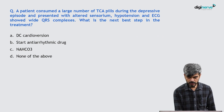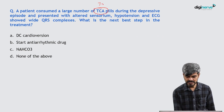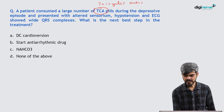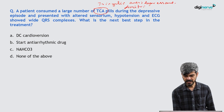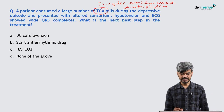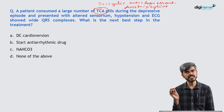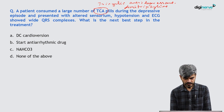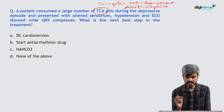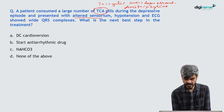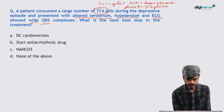A patient consumed a large number of TCA — tricyclic antidepressants. Examples include Amitriptyline, Imipramine, Dosulepin, and Nortriptyline — these are older antidepressants. He has consumed a large amount and presented with altered sensorium, hypotension, and ECG showing wide QRS complexes.